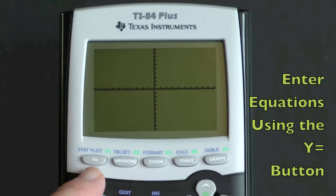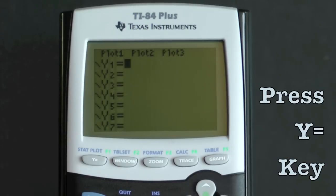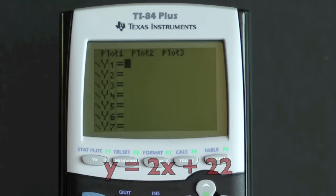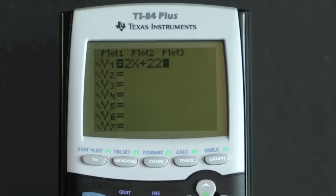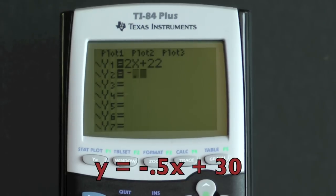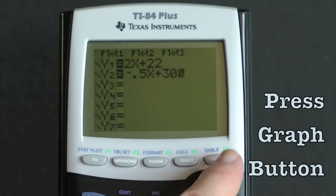We enter equations using the y equals button. Press y equals key and enter the two equations: y equals 2x plus 22, then scroll down to the next y equals and enter negative 0.5x plus 30. Press the graph button.